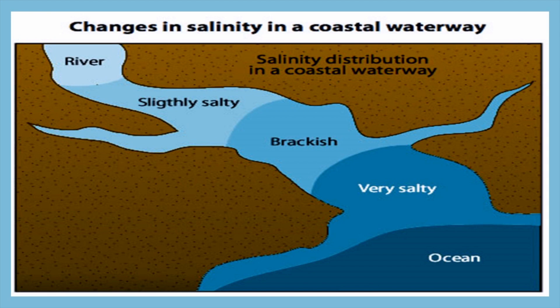Generally, salinity levels are highest near the mouth of the river where the ocean water enters. The influence of ocean water is dominant, and lowest upstream where fresh water flows in. However, actual salinity varies throughout the tidal cycle — low tide or high tide. Salinity levels in estuaries typically decline when rain increases the fresh water flow from streams and groundwater. Salinity levels usually rise during the summer when higher temperatures increase levels of evaporation in the estuary.